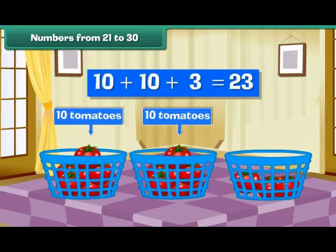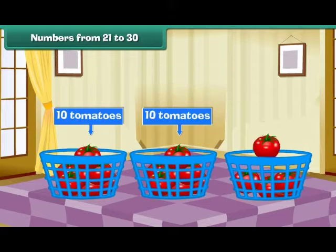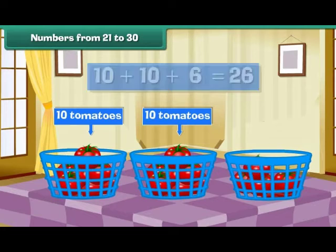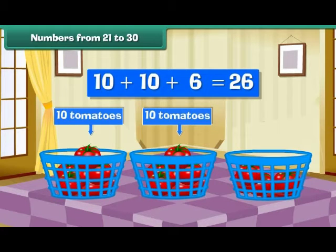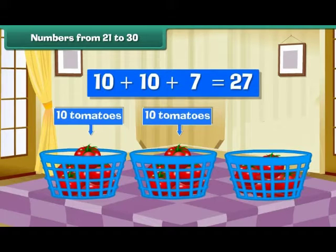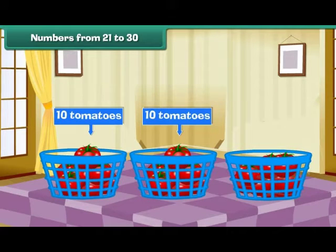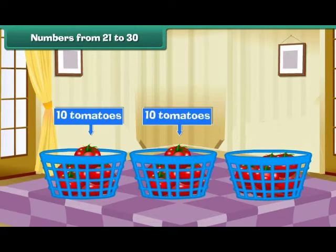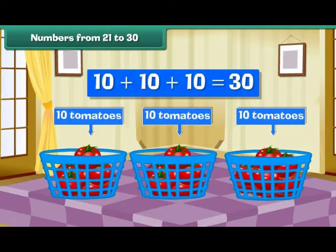Similarly, two tens and three make 23. Two tens and four make 24. Two tens and five make 25. Two tens and six make 26. Two tens and seven make 27. Two tens and eight make 28. Two tens and nine make 29. Two tens and ten make three tens — that is 30.